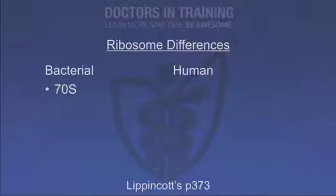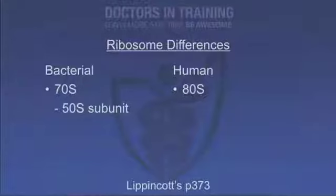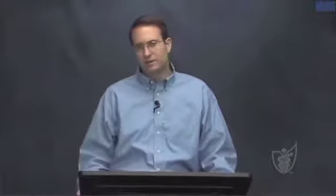Bacterial cells have a certain type of ribosome called the 70S ribosome, which is different than the human ribosome, which is an 80S ribosome. That's how these antibiotics will specifically target the bacteria as opposed to human cells. The bacterial ribosome is composed of two subunits, the 50S and the 30S subunits.